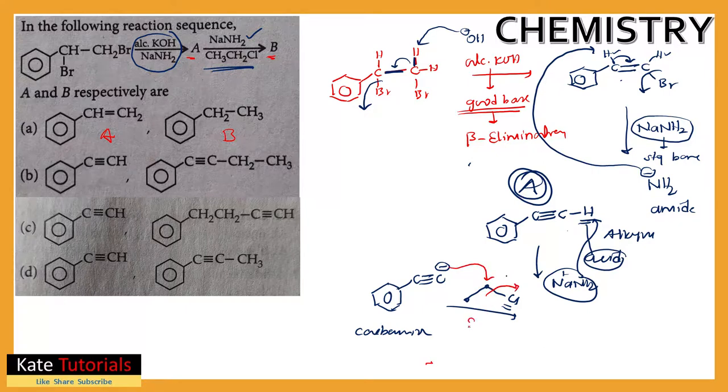Simple reaction: this carbanion easily attacks this and this chlorine is a good leaving group, it leaves the system. It is SN2 reaction - from backside it will attack, it forms a transition state and chlorine leaves the system. As soon as it leaves, benzene ring remains as it is, this C triple bond C remains as it is. This carbon-carbon bond happened, so here CH2 will be there, next to that I will be having CH3. So this is the product, this is my B.